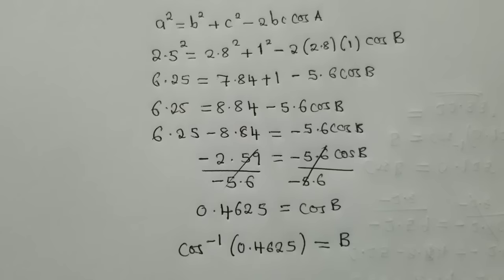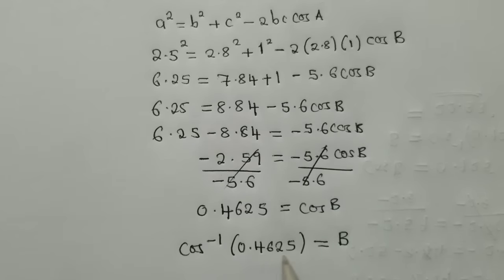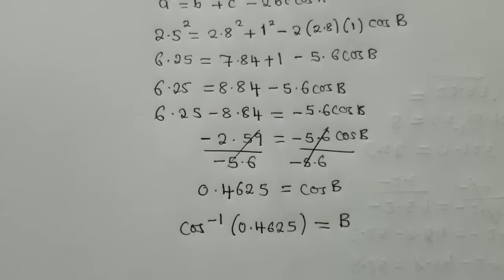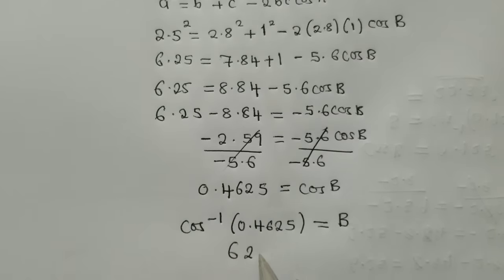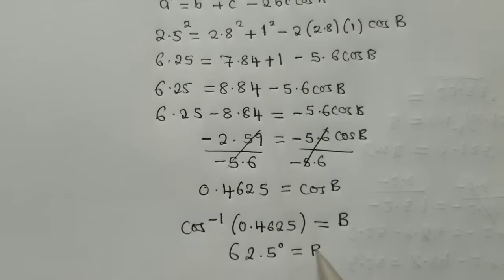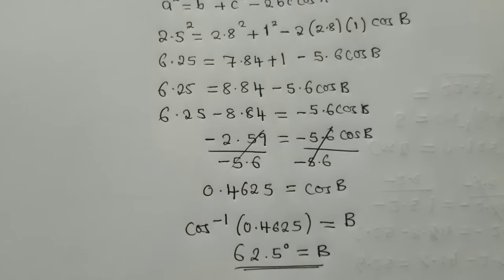So for you to do the cos inverse, you just press shift on your calculator, and then you go to cos. You even punch this number. You're going to get 62.5 degrees as your B. So our answer here is 62.5 degrees in one decimal place. Thank you so much for watching this.